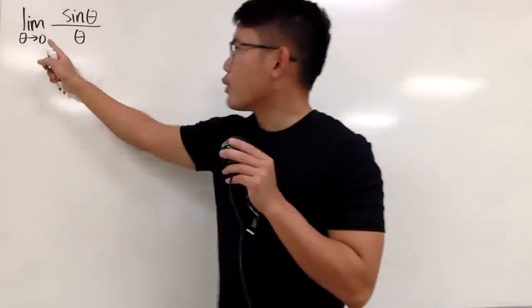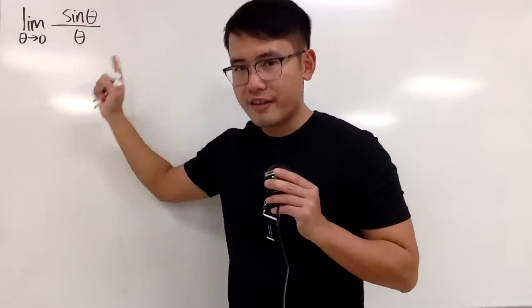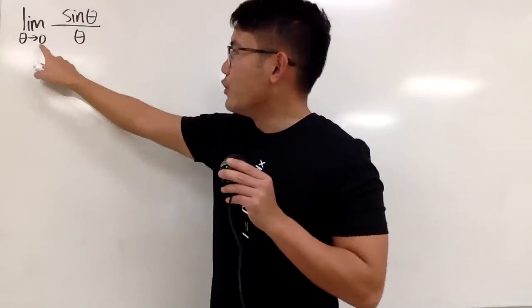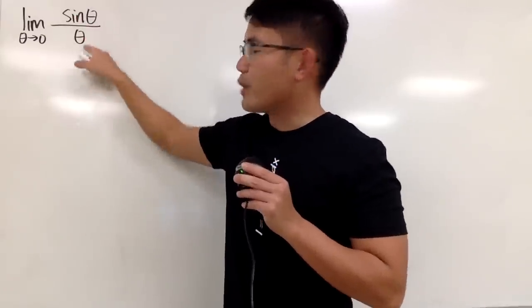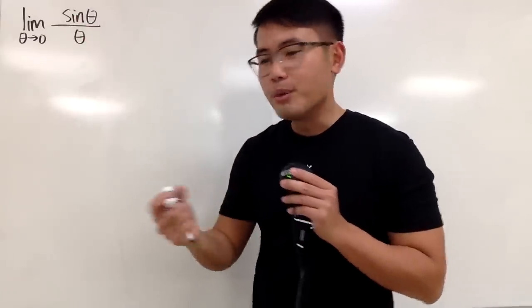Let's talk about the limit as theta goes to 0 of sine theta over theta. If we put 0 right here and right here, we end up with 0 over 0.